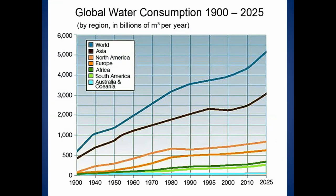Looking at water use over time from 1900 to a projection to 2025: back in 1900 the world was consuming about 600 billion cubic meters per year, projected to rise to over 5,000 within the next couple of years. Asia shows the greatest use, but North America has been the second greatest user going all the way back to 1900, yet we only have a very small percentage of the total global population.